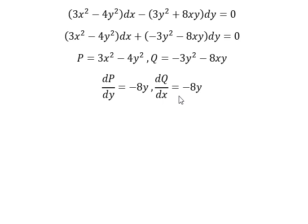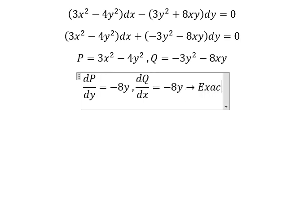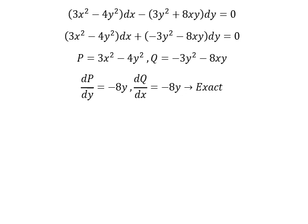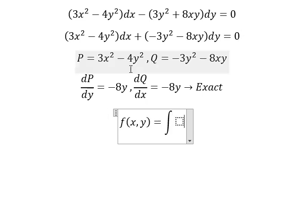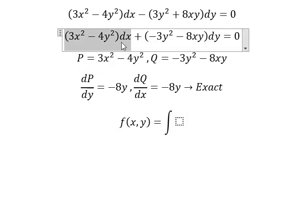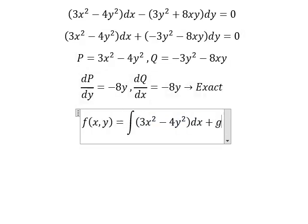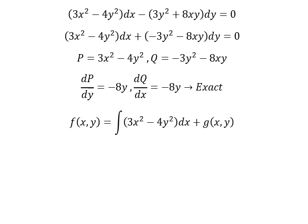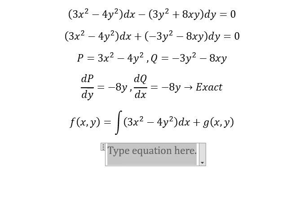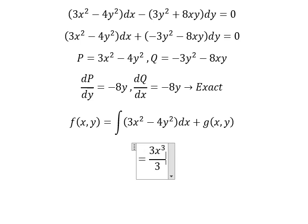We can see that they are the same, so that means the equation is exact. Now we need to set up the function f(x,y) equal to the integration. We select this one plus g(y). The integration of x gives us x to the power of 3 over 3, and the next term is x.